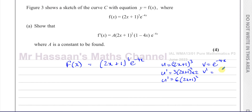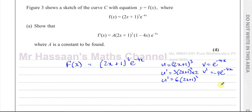For v dash, we differentiate e to the power of minus 4x. When you differentiate e to the power of something, it stays as it is — there's no multiplying by the power or adding 1 to the power. But then you use the chain rule: you take what's inside the function, which is minus 4x, differentiate it to get minus 4, and multiply the function by that. So v dash is minus 4 times e to the power of minus 4x.